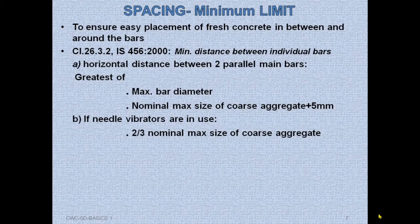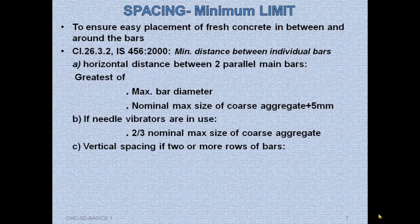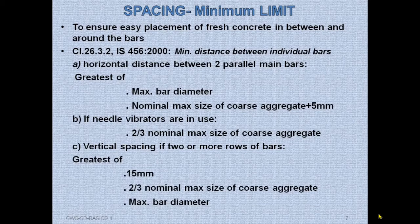If needle vibrators are used, the horizontal distance can be two-thirds of the nominal maximum size of coarse aggregate. For vertical spacing — when there are two or more rows of bars — the minimum vertical spacing should be the greatest of: 15 mm, two-thirds of the nominal maximum size of coarse aggregate, or the maximum bar diameter. The greatest of these three is the minimum limit for vertical spacing.